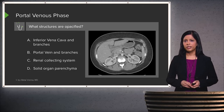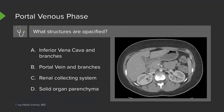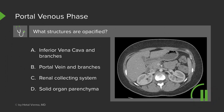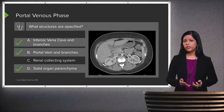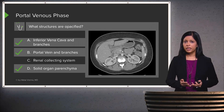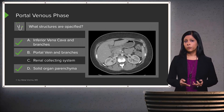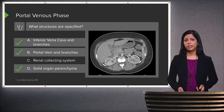And how about the portal venous phase? What structures would you see best identified in the portal venous phase? This actually shows us multiple different structures. It shows us the IVC and its branches, so the entire venous system is well seen. The portal vein and its branches are well seen as well. And this is actually the best phase to evaluate solid organ parenchyma.